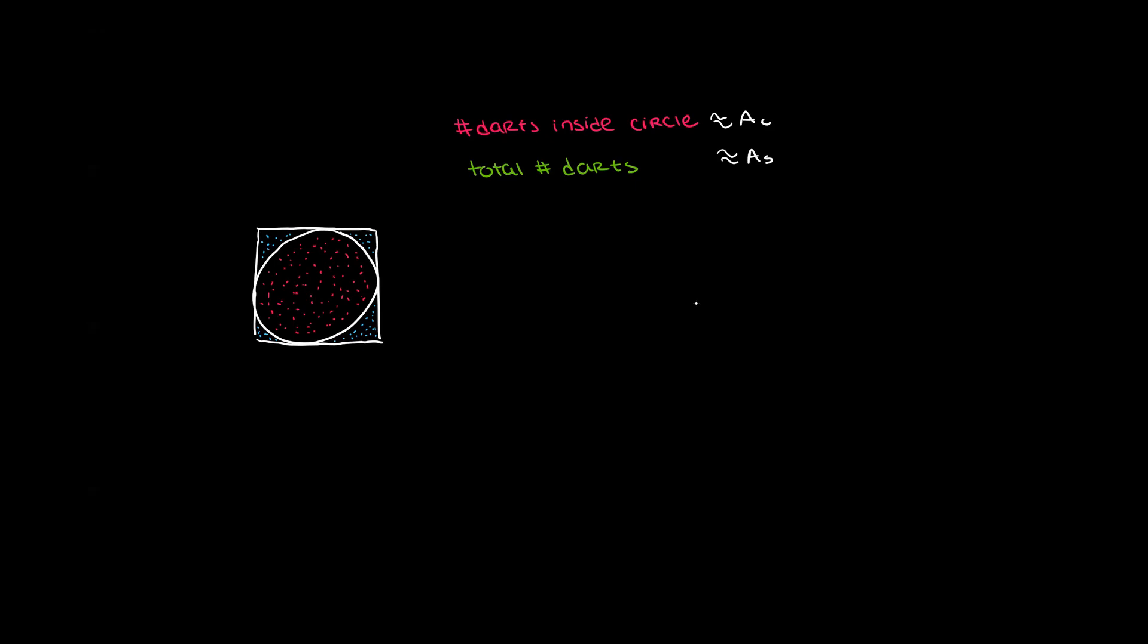So let's assume that the ratio of the number of darts inside of the circle to the number of darts thrown is proportional to the ratio we found before, of the area of the circle to the area of the square. Well, from before, we know the area of the circle over the area of the square is equal to Pi over 4. And so by the transitive property, the number of darts inside of the circle over the total number of darts thrown will be about Pi over 4.